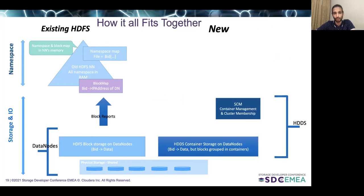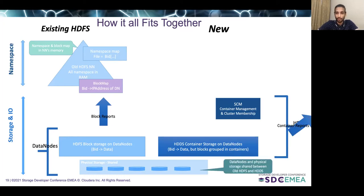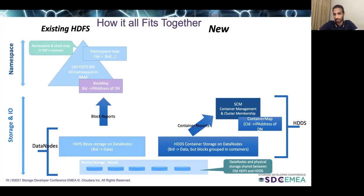Now let's look at how Ozone improves upon this architecture. In Ozone there is a concept of containers. A container by default is 5 GB in size and it's an aggregation of blocks. In Ozone, data nodes are now sending container reports rather than block reports — this is a factor of 100x reduction in the size of these reports. The metadata service receives these container reports and makes sure that the containers are sufficiently replicated. In case of a missing container or a failed data node or disk, it will schedule replications to maintain the minimum replication factor for containers in the cluster at all times.